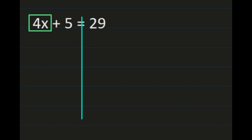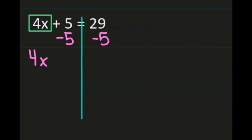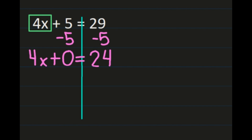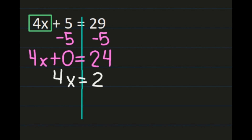Keeping the 4x together, we have to start by isolating 4x using our inverse operation. We had plus 5, so we're going to subtract 5. We don't want anything else on the left-hand side with our 4x. If we subtract 5 from the left we also have to subtract 5 from the right. The 4x hasn't changed. 5 minus 5 is 0, and on the right-hand side 29 minus 5 is 24, leaving us with 4x equals 24.